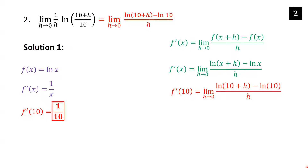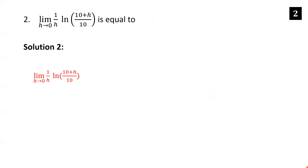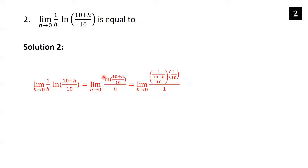The second method uses L'Hôpital's rule. Rewriting the expression with ln((10+h)/10) in the numerator and h in the denominator, we apply L'Hôpital's rule: take the derivative of the top and the derivative of the bottom. The derivative of h is 1. For the top, by the chain rule, the derivative of ln((10+h)/10) is 1/(10+h) times the derivative of the inside, which is 1/10. Plugging in h = 0 gives (1/10)/1 = 1/10.